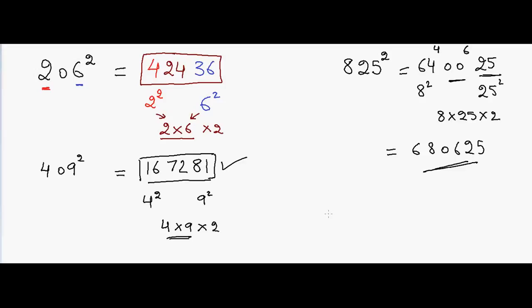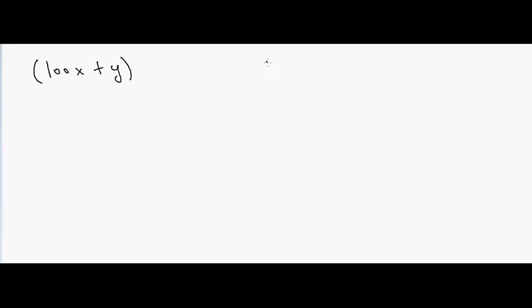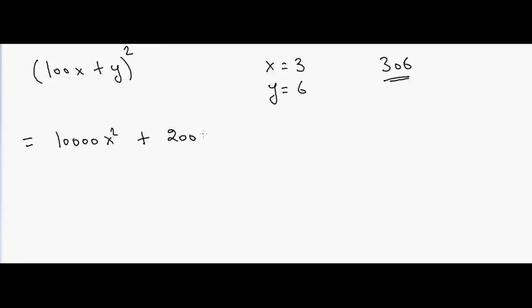With practice you can do this without writing it down. How does this trick work? Any three-digit number can be written as 100x plus y. If x equals 3 and y equals 6, the number is 306. Squaring gives 100x squared plus 200xy plus y squared — with four zeros for x squared, two zeros for 2xy, and no zeros for y squared.